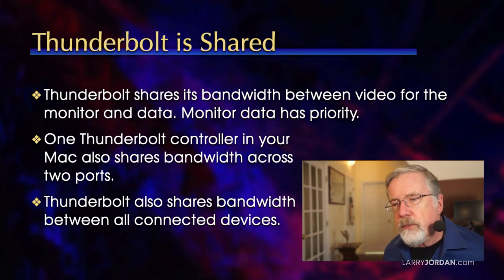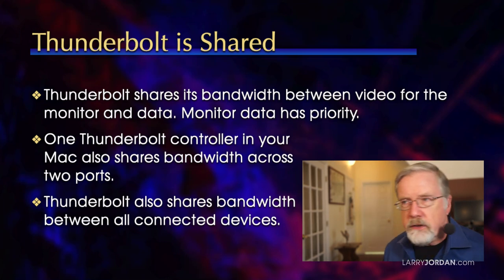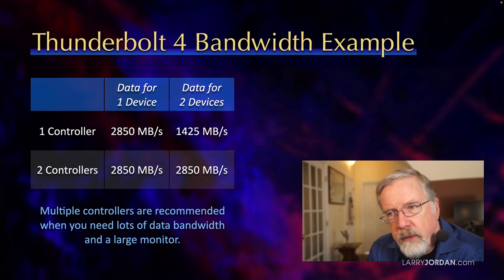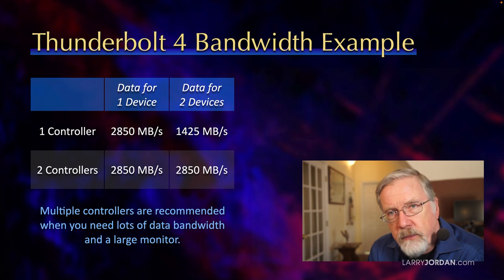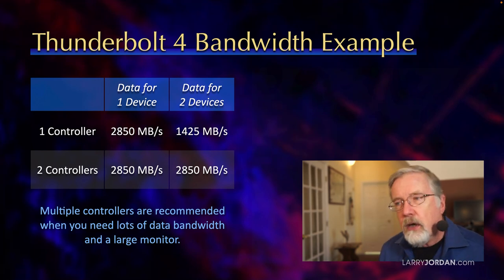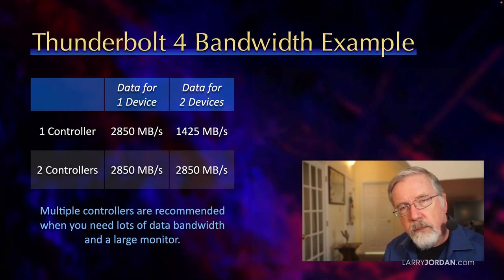Thunderbolt also shares bandwidth between all connected devices. Let's illustrate what this means. If I have one controller and one device plugged in, it's going to transfer data at the maximum speed — assuming the device supports it — of 2,850 megabytes per second. If I plug in a second device, that bandwidth is now shared between the two devices, so each will only get half, assuming both are writing data at the same time. If it's only one at a time, they get full speed, but the bandwidth is shared between the two.